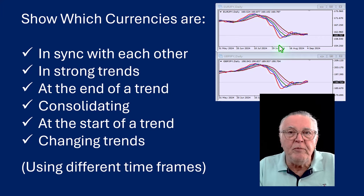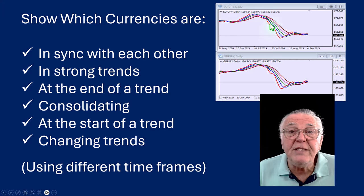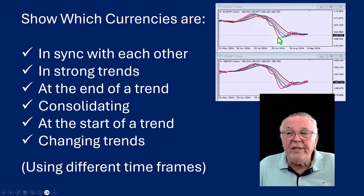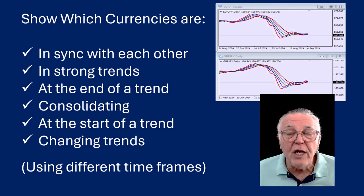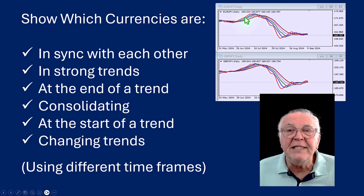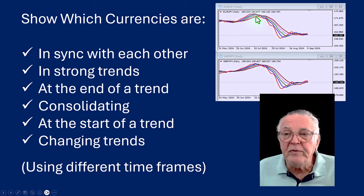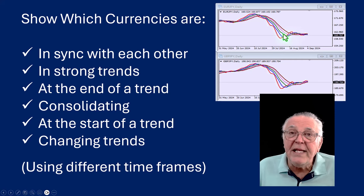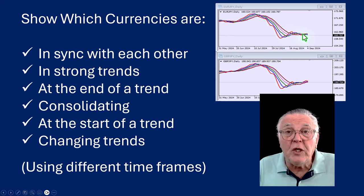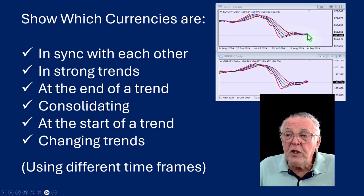You can also use them to see the end of a trend, and that's very easy. What happens is the fast moving average starts crossing over the slower moving averages, and that indicates an end of the trend. For instance, there was a nice trend, the fast moving average started crossing over the next moving averages, and that was the end of the trend.